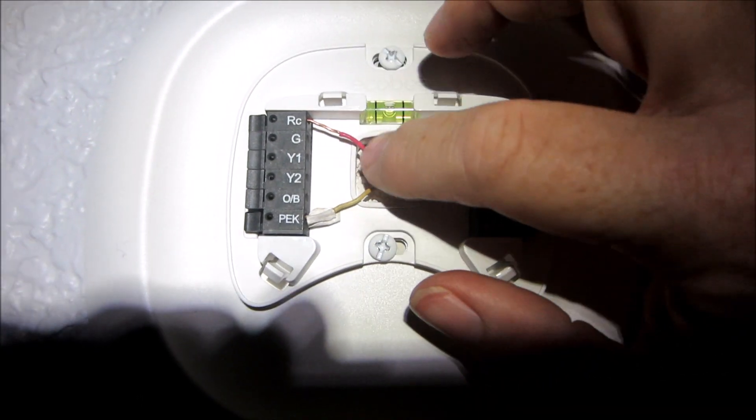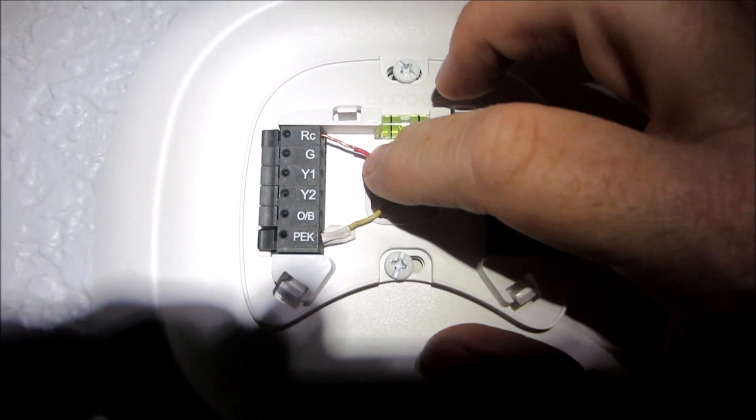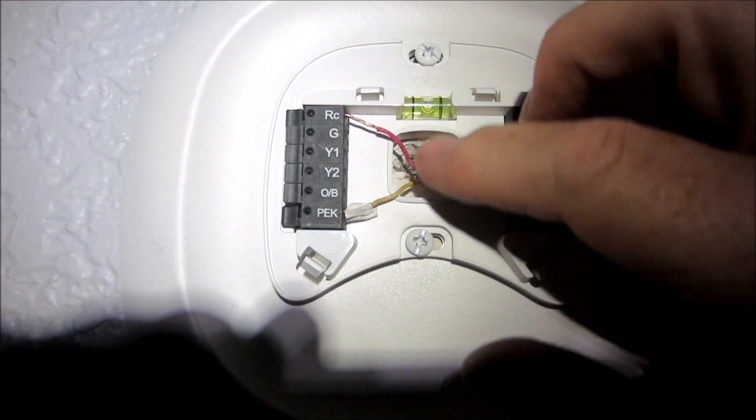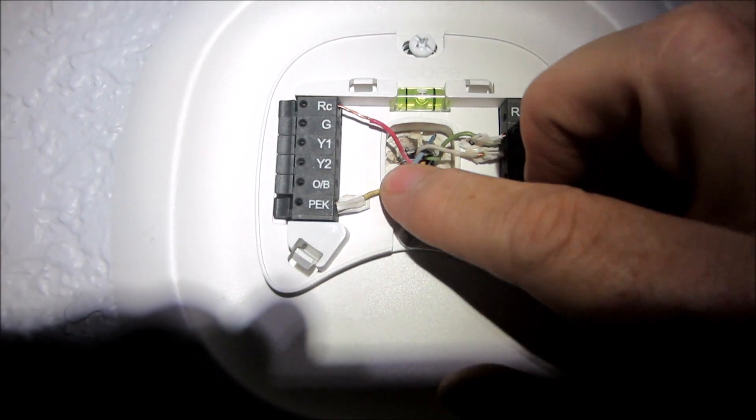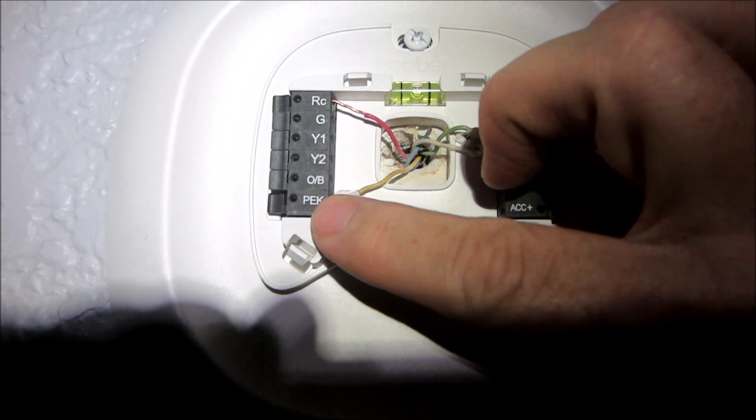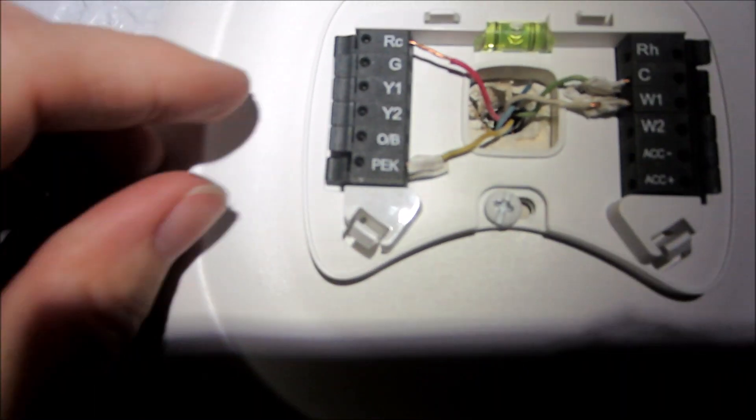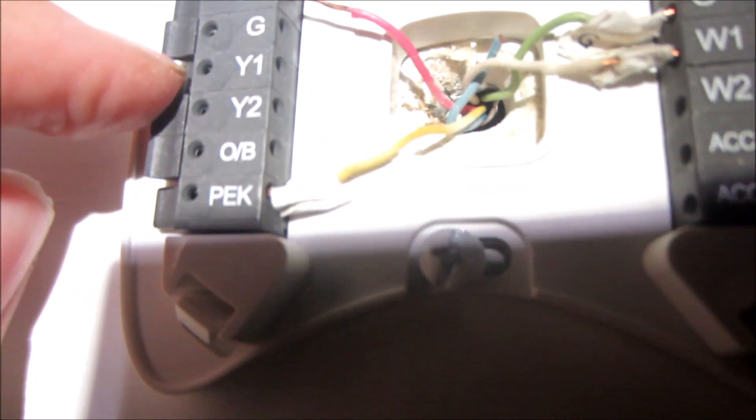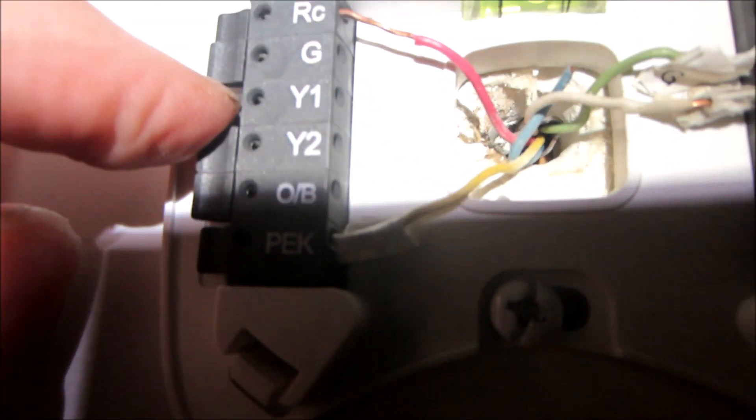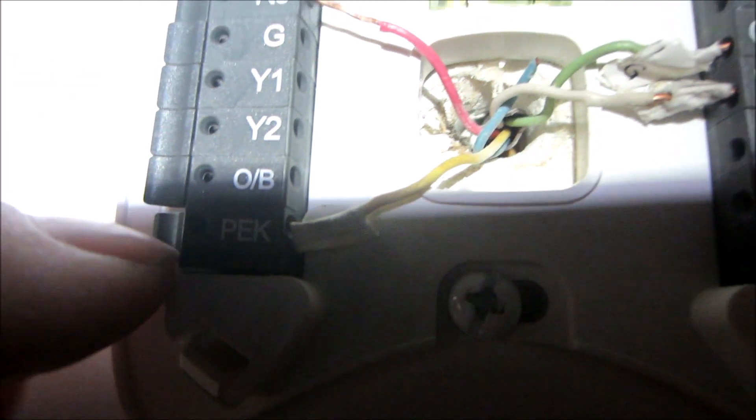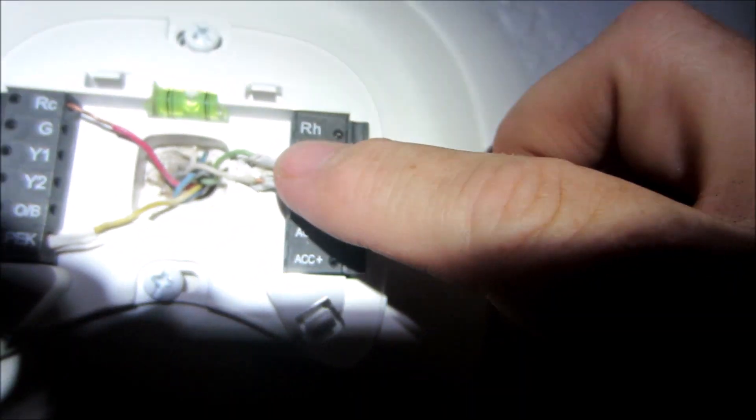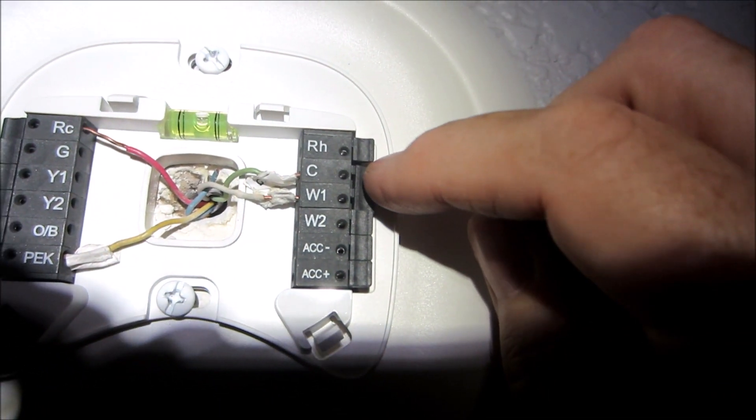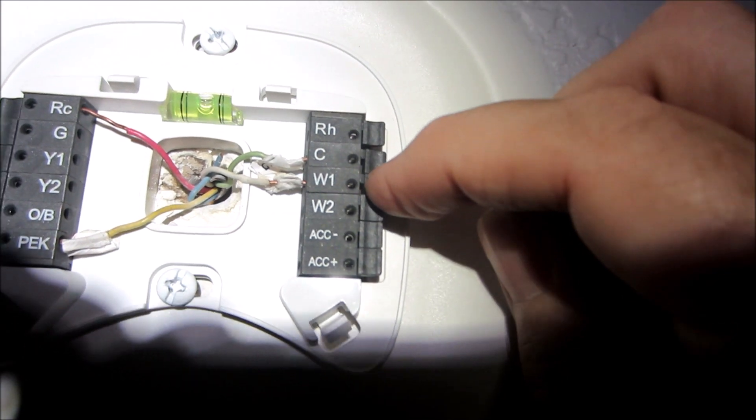My red one was labeled RC on the old one, so I attached it to the RC here. The yellow one they said mark it as PEK, which I did here. All you do is you push this down and then there's a hole there on the side of it. So you put the wire there on the hole while you're holding it down, and when you let go it should stay down. And then the next one they said to do was label the green one with a C and I put it in there. And then the white one label is W1 and I've done that. So all four wires are done.